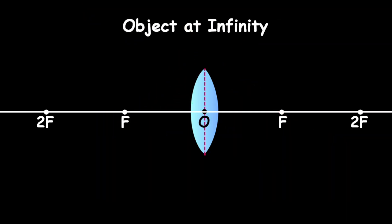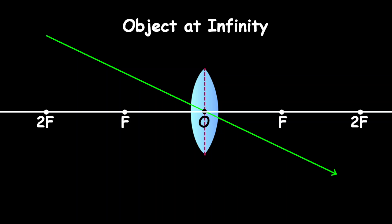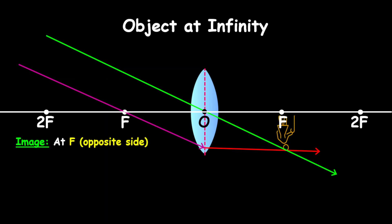Now let's look at the object at infinity. If you're coming from infinity, you need parallel rays. We draw the ray that goes straight through the optical center, and then one going through F — because if an incident ray goes through F, it will leave the lens parallel to the principal axis. Notice where they meet: they meet right at F. So the image is at F, on the opposite side, inverted, real, and since the image is closer to the lens compared to the object, it is smaller and diminished.